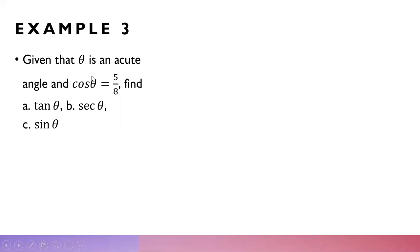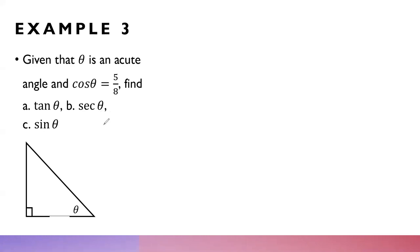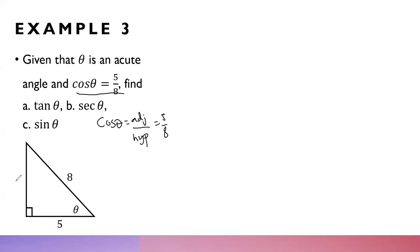Example 3: Given that theta is an acute angle and cosine theta equals 5 over 8, find (a) tangent theta, (b) secant theta, and (c) sine theta. The first thing we need to do is draw the triangle. Since cosine theta equals adjacent over hypotenuse, and cosine theta equals 5 over 8, the hypotenuse is 8 and the adjacent side is 5. Now let us find the other side. Using C squared equals A squared plus B squared, with C equal to 8: 8 squared equals A squared plus 5 squared.